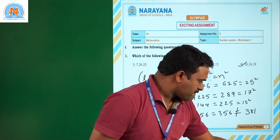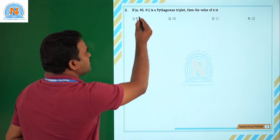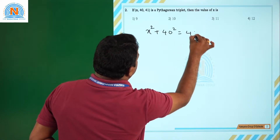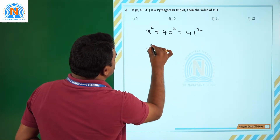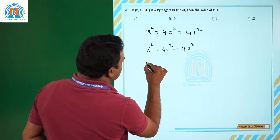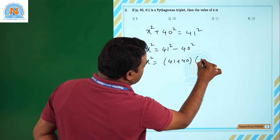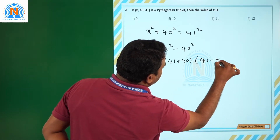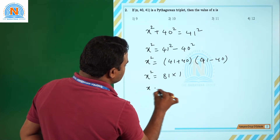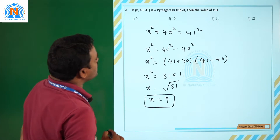Next question: if (X, 40, 41) is a Pythagorean triplet, find X. Therefore X² + 40² = 41². Transposing 40² to the right: X² = 41² − 40². Applying the A² − B² = (A+B)(A−B) formula: X² = (41+40)(41−40) = 81 × 1 = 81. Therefore X = √81 = 9. Among the options, the first one is correct.